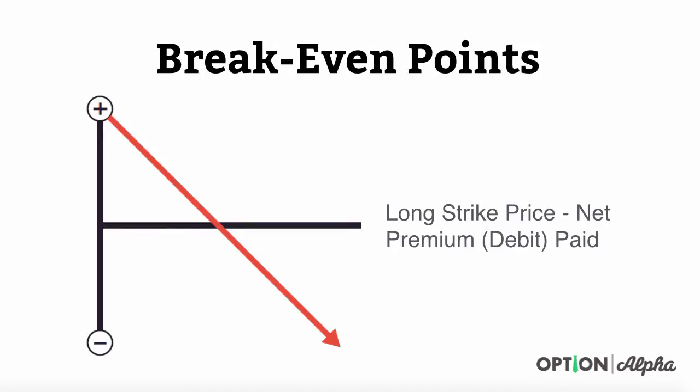Breakeven points are pretty easy to calculate with this trade. You basically take the long strike price and subtract out the debit that you paid. If you received a credit, you would take the long strike price plus the credit that you received in doing the strategy.